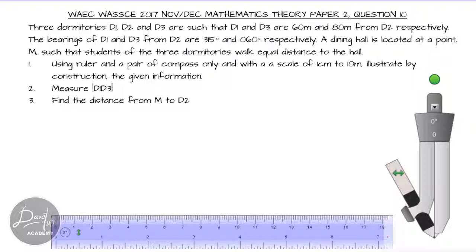In this question we are given three dormitories D1, D2, and D3, such that D1 and D3 are 60 meters and 80 meters from D2. The bearings of D1 and D3 from D2 are 315 and 060. A dining hall is located at a point which is the same distance from all three dormitories. We are to use a ruler and compass with a scale of 1 cm to 10 meters, illustrate the given information, measure D1D3, and find the distance M to D2.